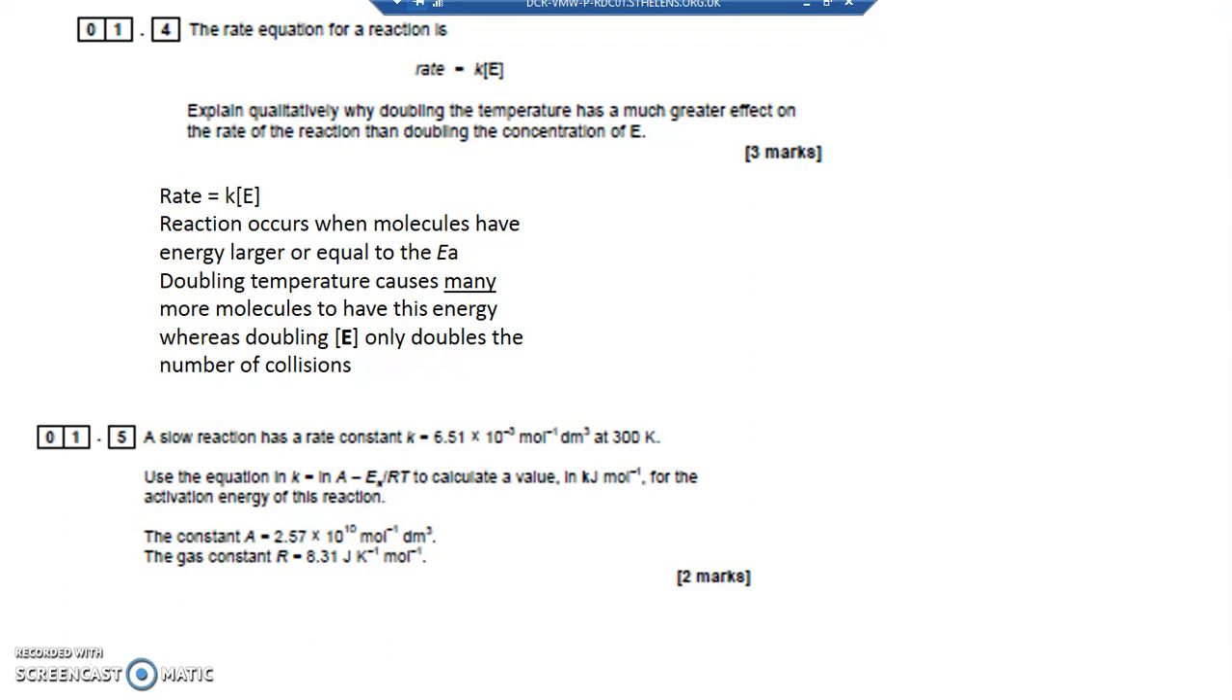Whereas doubling the concentration of E only doubles the number of collisions. You don't know whether they're going to be successful or not. They'll only be successful if they've got the activation energy. So just doubling the number of collisions doesn't mean that they're going to be successful ones.